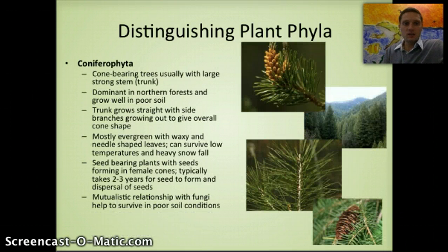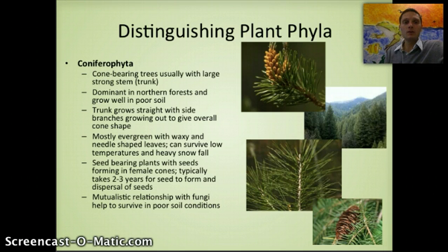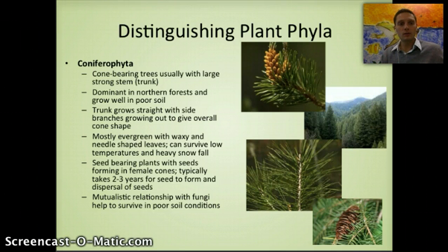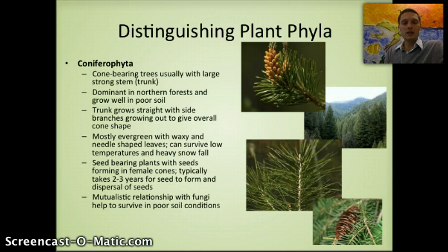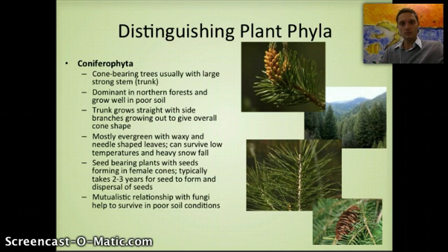The next group is the conifers — cone-bearing trees with long, strong trunks that are dominant in northern forests and grow well in poor soil. The trunk grows vertically with side branches giving the tree an overall cone shape. They have a waxy cuticle and other adaptations to reduce water loss, can survive low temperatures and heavy snowfall, and often have a mutualistic relationship with fungi that helps them survive in poor soil conditions.